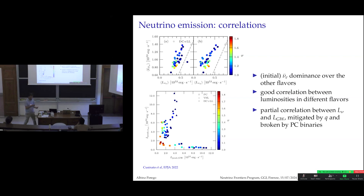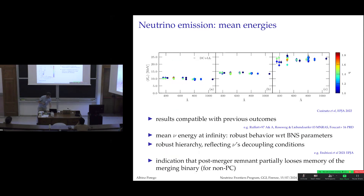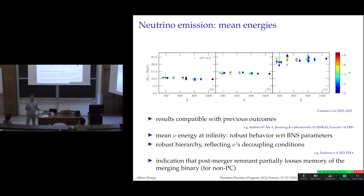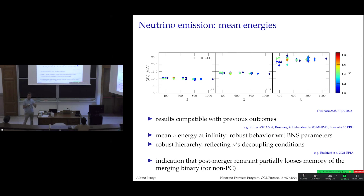Regarding mean energy: despite changing masses, equations of state, and luminosities, the mean energy appears quite robust and nearly flat across configurations. There is a clear hierarchy: NuE has the lowest energy, NuE-bar is intermediate, and NuX (mu and tau) is highest. This reflects where neutrinos last interact inelastically: mu and tau neutrinos couple deeper inside via pair processes, while electron neutrinos interact extensively with neutrons in the outer layers, leading to lower decoupling temperatures.